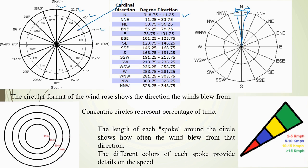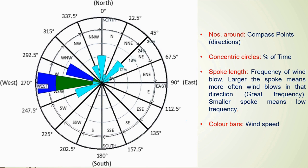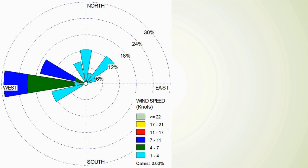The different colors of the spokes provide details of speed. In a single view: the numbers around the compass rose indicate the direction; the concentric circles indicate the percent of time; spoke length indicates the frequency of wind blowing. Larger spokes mean wind blows more often from that direction, and smaller spokes mean low frequency. Color bars represent wind speed.